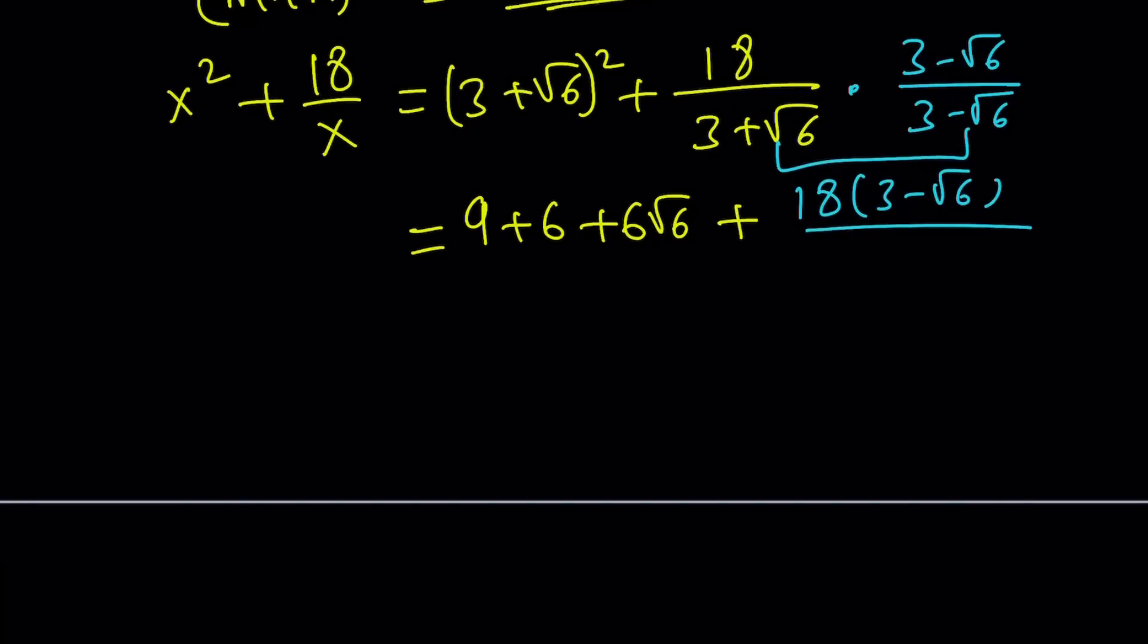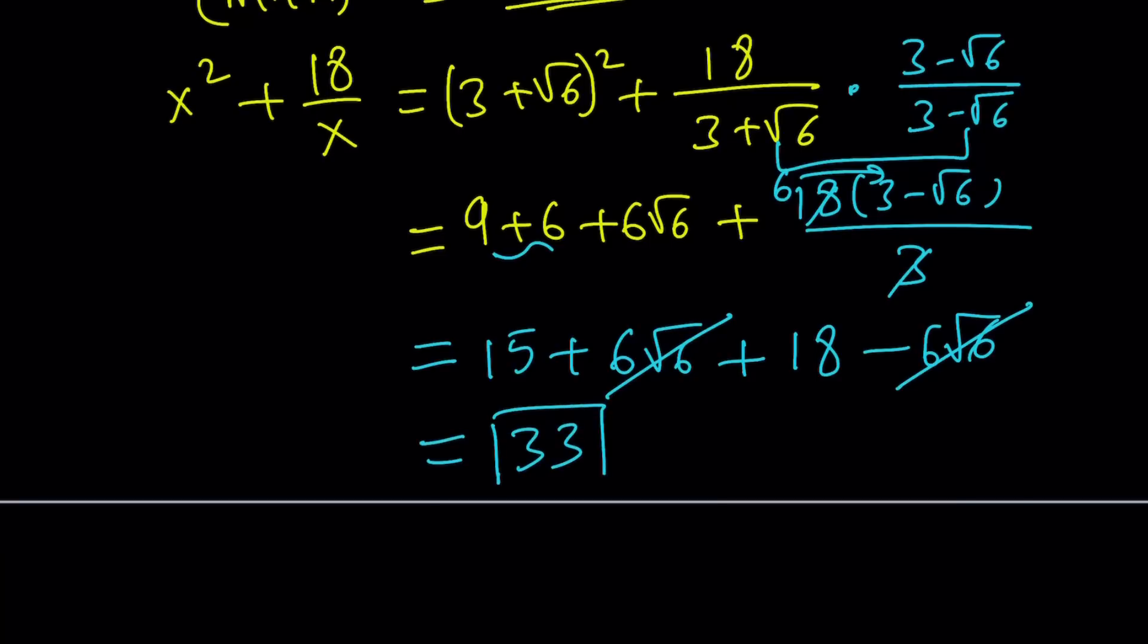So when you multiply these two things from difference of two squares, you get 9 minus 6, which is 3. Now, what do you get from here? We get the following. 18, 3 goes into 18, 6 times. So they kind of simplify. 9 plus 6 is 15. So we get 15 plus 6 root 6 plus, now I got a 6 times the 3 minus root 6. So I'm going to go ahead and distribute that. 18 minus 6 root 6. And magically, or mathematically, these two terms cancel out, disappear, and we get 33.